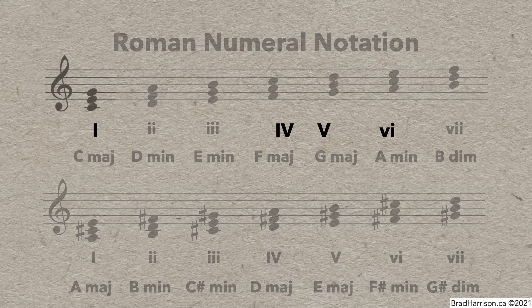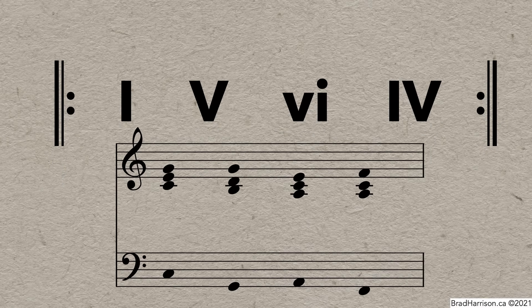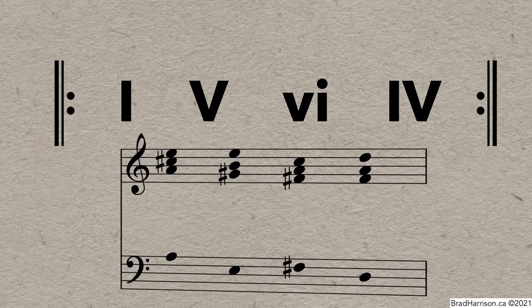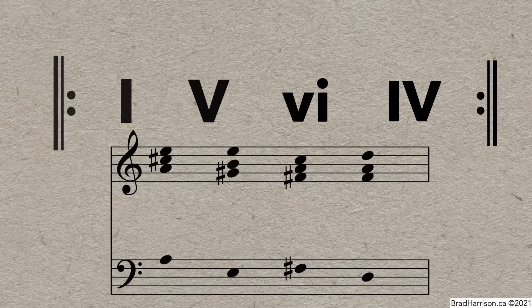A very common chord progression in pop music is 1, 5, 6, 4, repeated over and over. This is what it looks like in C. But if you know your scales and keys well, you can easily transpose into another key very quickly without describing the chords individually. This can be very useful if a song is too high or too low for a singer.